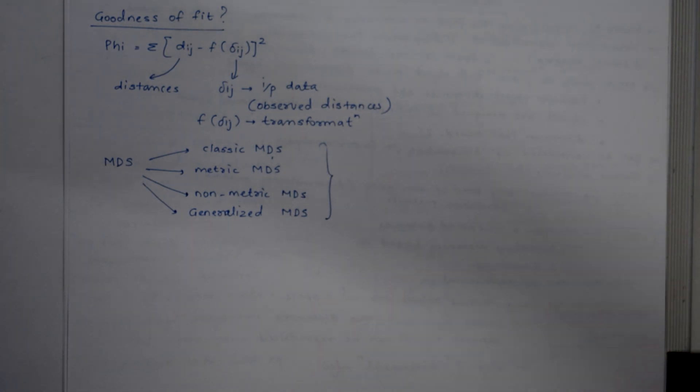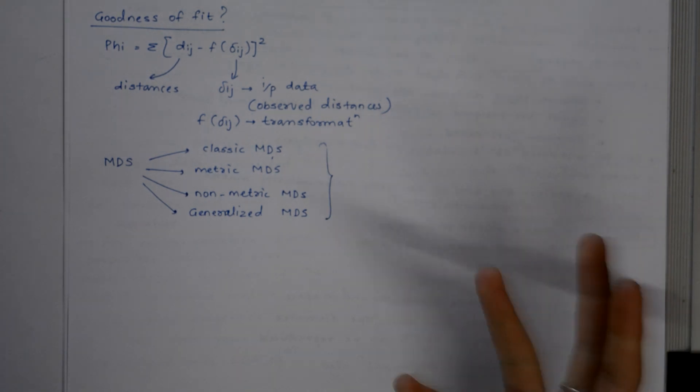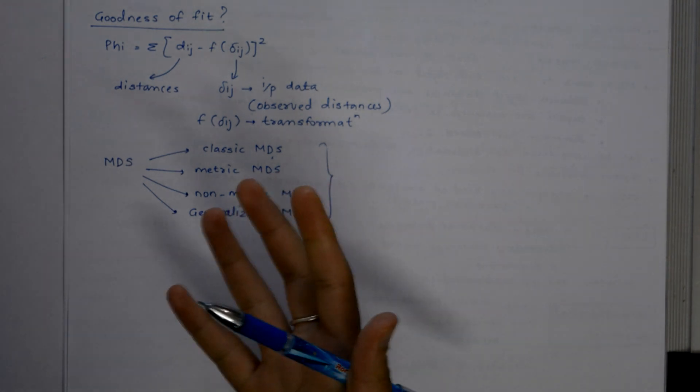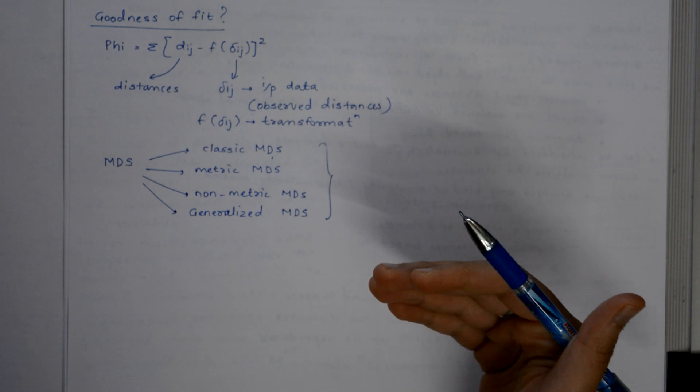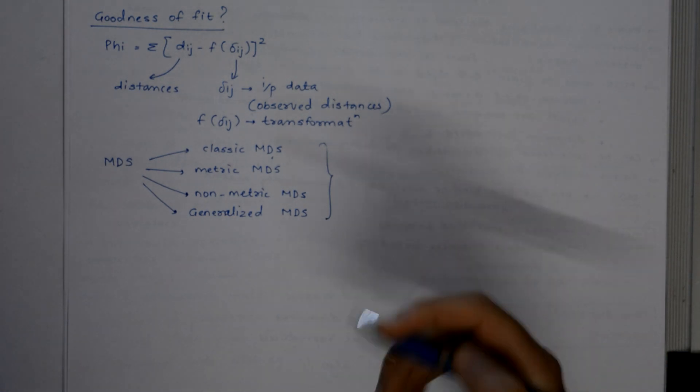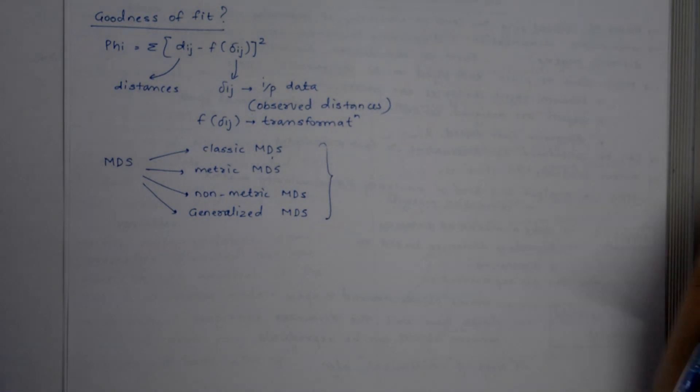In general, MDS allows the researcher to ask relatively simple questions like 'how similar is brand A to brand B?' and to derive from those questions underlying dimensions without the respondents ever knowing what the researcher's real interest is. So this was all about MDS. Stay tuned for next videos, guys.